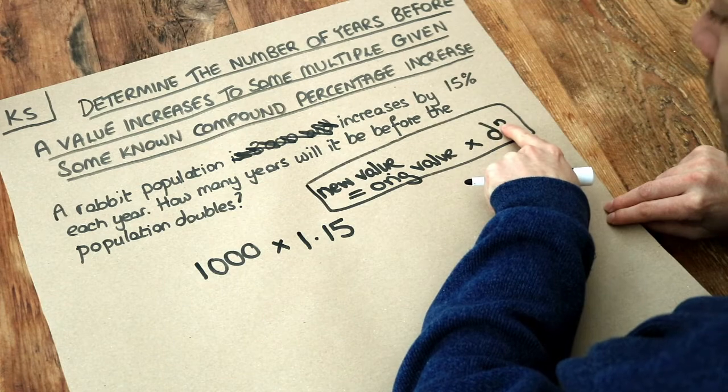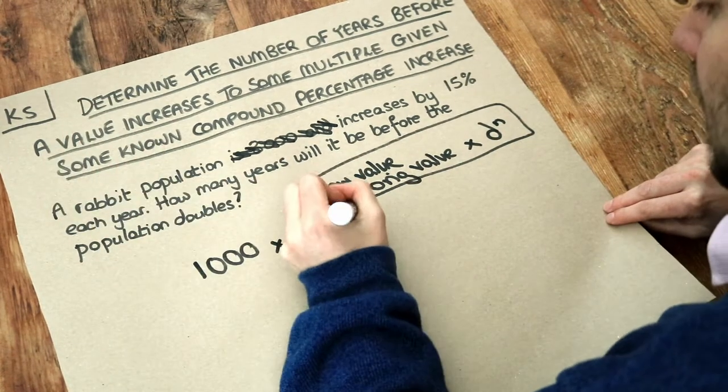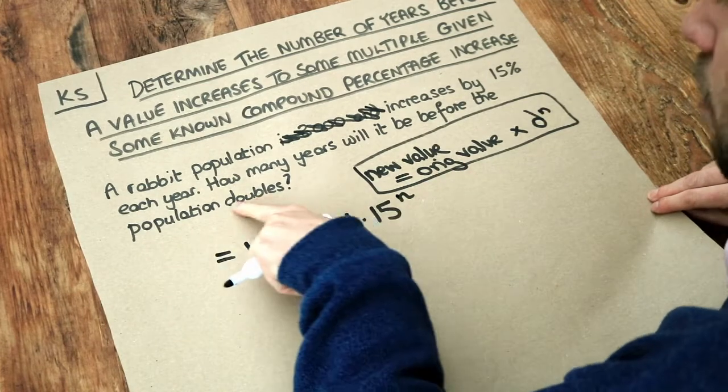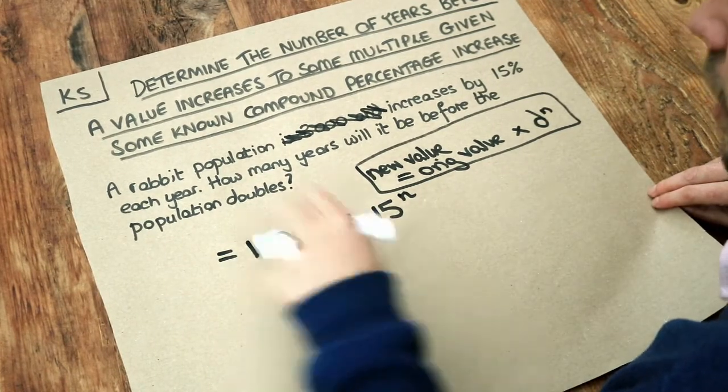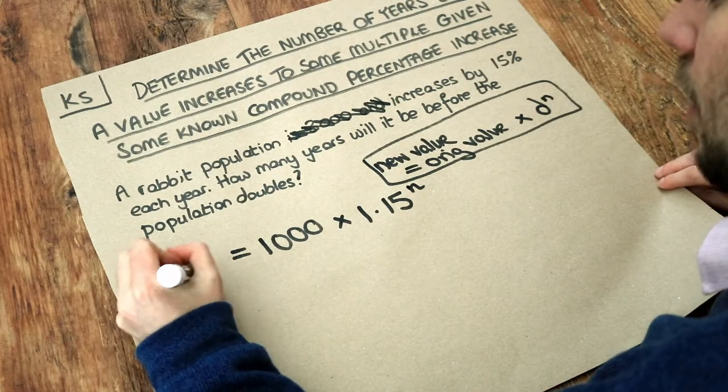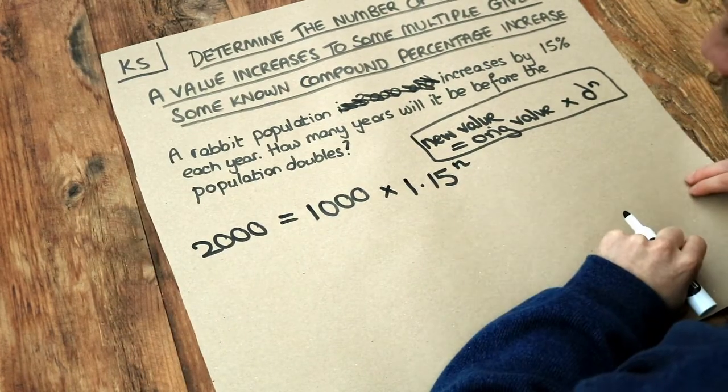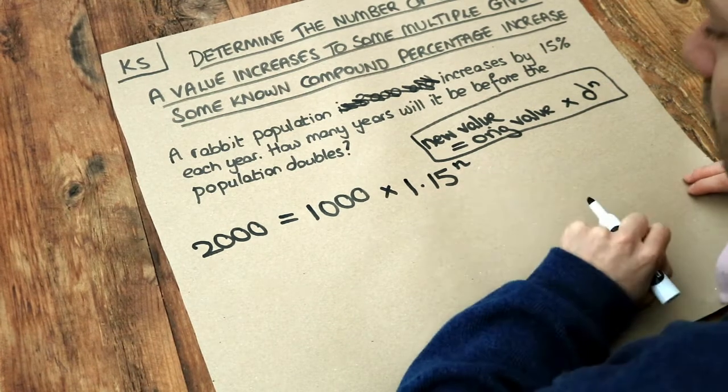To the power of the number of years, well we don't know how many years it is, so we're going to have to keep that as n for the moment. And that then doubles the population. So if we had 1,000 rabbits, we then have 2,000 rabbits. And basically we just want to solve this equation to find n, the number of years of increase of this 15%.